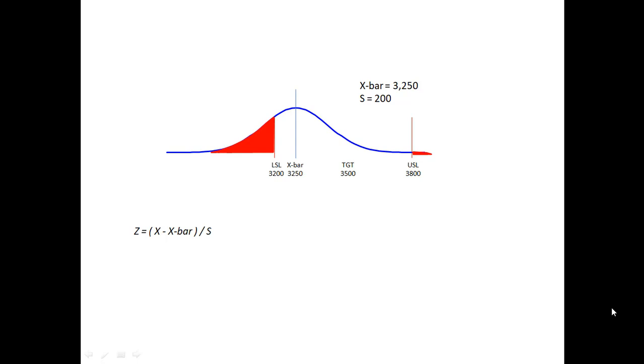The formula that matters here is the z formula: z equals x minus x-bar divided by s. This is how we convert the blue curve with its own mean and standard deviation into a standard normal curve that will have a mean of zero and a standard deviation of one. The lower z is the z value associated with 3200.